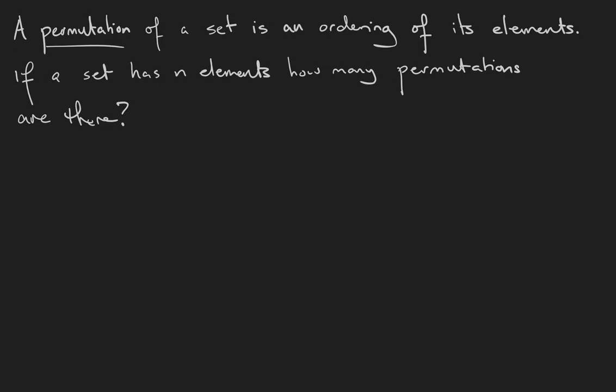We must choose the first element of the set. There are n such choices, but since we're putting the set in order, we're not going to use that element another time. So that means there's n-1 elements left for the second spot. Likewise, there's n-2 elements for the third spot and so on until we're finished with the set and we only have one choice for the last element.